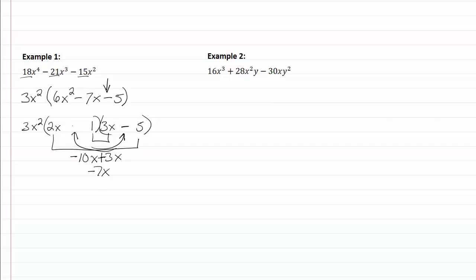My positive will come over here in this box, and I've now factored it. So my final answer then for factoring this one is going to be 3x² times 2x plus 1 times 3x minus 5.